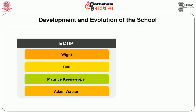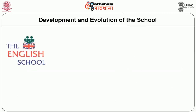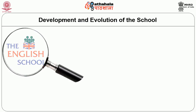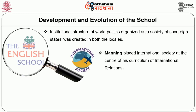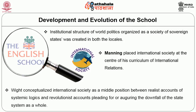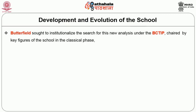Secondly, there is BCTIP where White, Bull, Morris and Adam Watson assembled from other prominent universities in the UK. The essence of the English school's inquiry — namely identification of the institutional structure of world politics organized as a society of sovereign states — was created in both locales. While Manning placed international society at the center of his curriculum, White conceptualized international society as a middle position between realist accounts of systematic logics and revolutionist accounts arguing for the downfall of the state system. The field sought to institutionalize this new analysis under BCTIP, chaired by key figures like Butterfield, White, Watson and Bull, who met regularly since 1959.